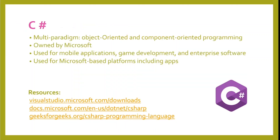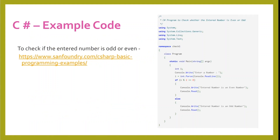C Sharp is a multi-paradigm, object-oriented, and component-oriented programming language owned by Microsoft. It's used for mobile applications, game development, and enterprise software, and is used for Microsoft-based platforms including apps. Here's an example of C Sharp code to check if the entered number is odd or even.